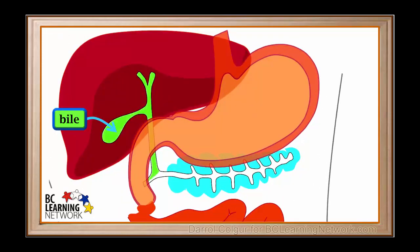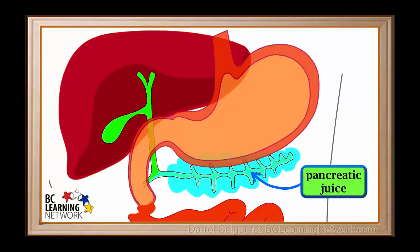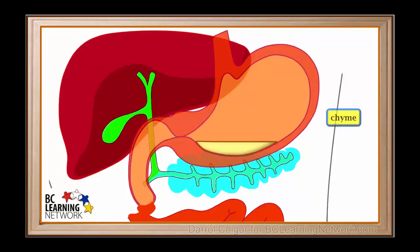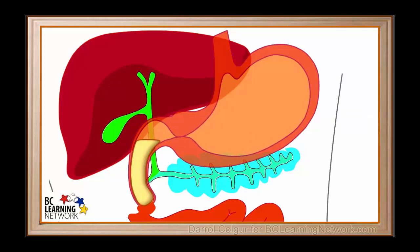The liver produces a substance called bile, which fills the gallbladder and bile ducts. And the pancreas produces a mixture called pancreatic juice, which fills the pancreatic duct. Now we'll close the pyloric sphincter and imagine some chyme in the stomach. The sphincter opens briefly and lets some chyme into the duodenum. Bile is secreted from the bile duct into the duodenum.